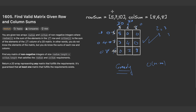One downside: in an interview you may not be allowed to modify the input arrays. What we are doing here is modifying the input row sums and column sums each time we place a number. If that's a concern, one way to solve it is to create a copy of the column sums and a copy of the row sums. That way we won't modify the input arrays. The space complexity is O(1) if we modify in place.